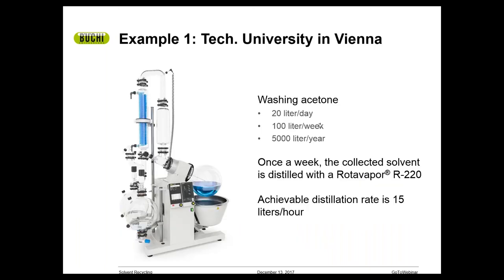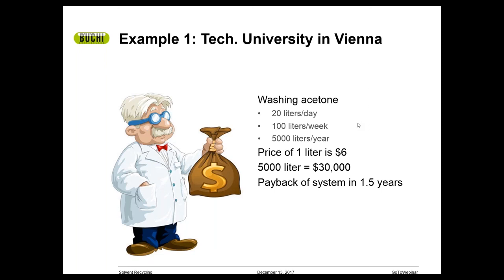We'll get into some real-world examples. A tech university in Vienna processes 20 liters a day of solvent — about 5,000 liters a year. This is just the acetone used to clean glassware, not the acetone used throughout every process. They're able to process 5,000 liters a year, reusing it to continue washing. That's 5,000 liters of acetone they did not have to buy. If a liter of acetone is $6, that's $30,000 a year for solvent — meaning they pay for the system in one and a half years. It just makes sense.